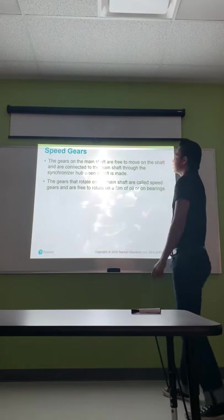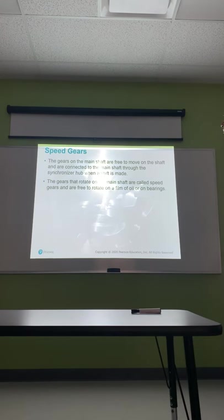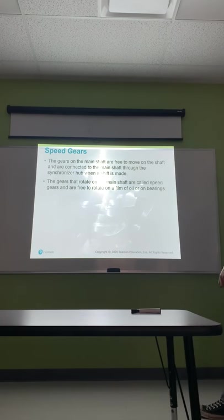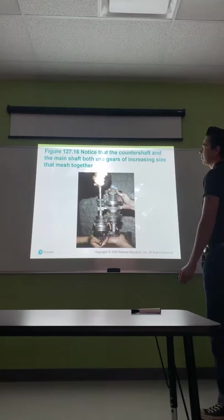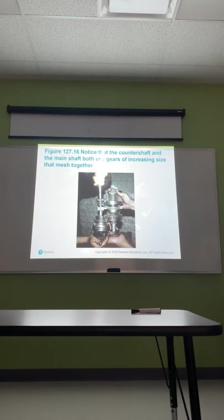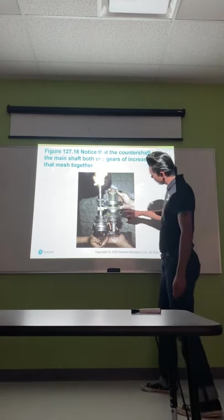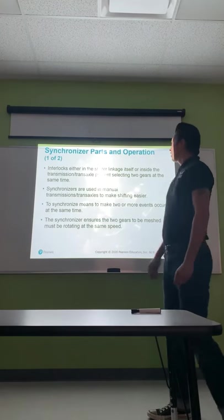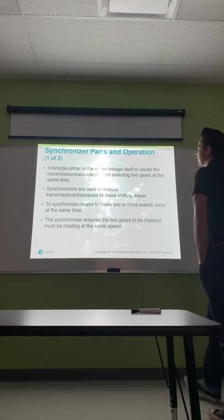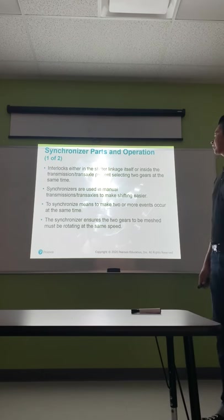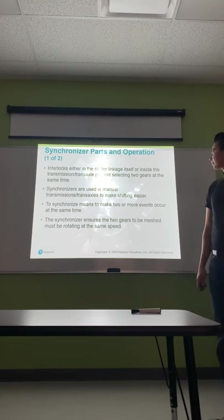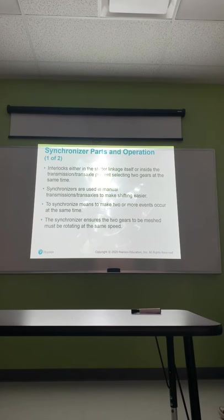The gears on the main shaft are free to rotate and are connected through the synchronizer hub — these are called speed gears. When a shift is made, these speed gears rotate freely on the main shaft on bearings or a film of oil. Both the counter shaft and main shaft use gears of increasing size that mesh together. Interlocks in the shift linkage or inside the transmission prevent selecting two gears at the same time. Synchronizers are used to make shifting easier — to synchronize means to make two or more events occur at the same time. The synchronizer ensures the two gears to be meshed are rotating at the same speed.